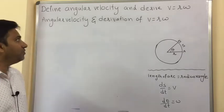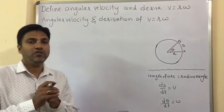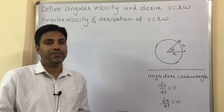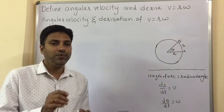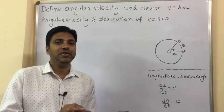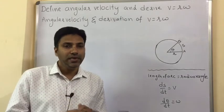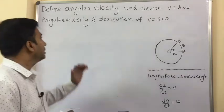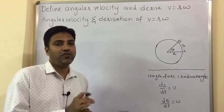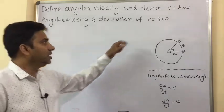Now let us define angular velocity and derive v equals r-omega. The meaning of angular velocity is the rate of change of angular displacement. When the object is in circular motion, the change in angular displacement with respect to time is called angular velocity.